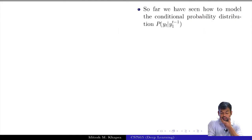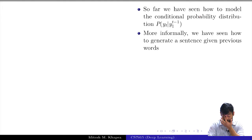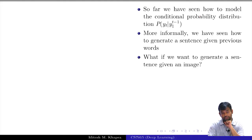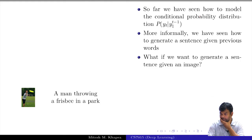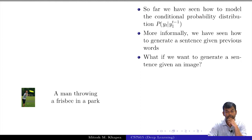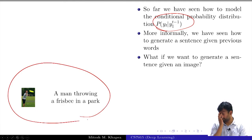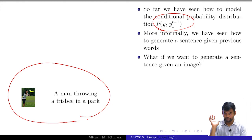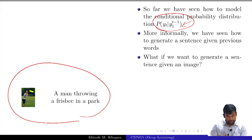So far we have seen how to model the conditional probability distribution given the previous t minus 1 words. Now let me give a different application: what if we want to generate a sentence given an image? Formally, we were interested in P(y_t | y_1, ..., y_{t-1}). Now we want P(y_t | y_1, ..., y_{t-1}, image) — given the image and the description generated so far, generate the next word.